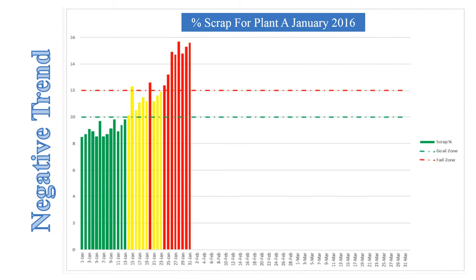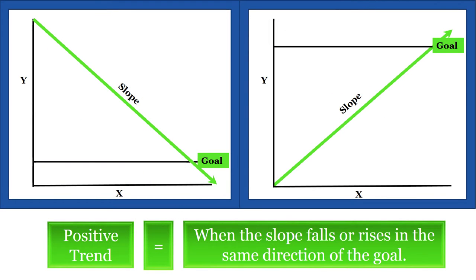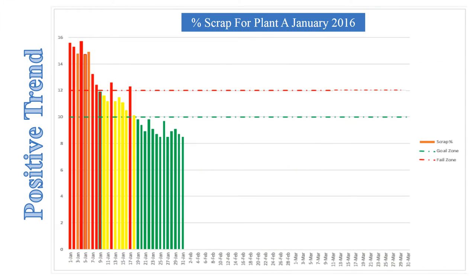A negative trend in a KPI bar chart is displayed when the visual cues of the bar changes from green to red in successive order. Whereas a positive trend is one in which the slope falls or rises in the same direction of the KPI goal. Here we see two charts — one that has an ascending slope and the other with a descending slope. In both cases, these charts are displaying positive trends as the slope is falling or rising in the same direction as the goal. A positive trend in a KPI chart will show the visual cues of the bar changing from red to green in successive order.